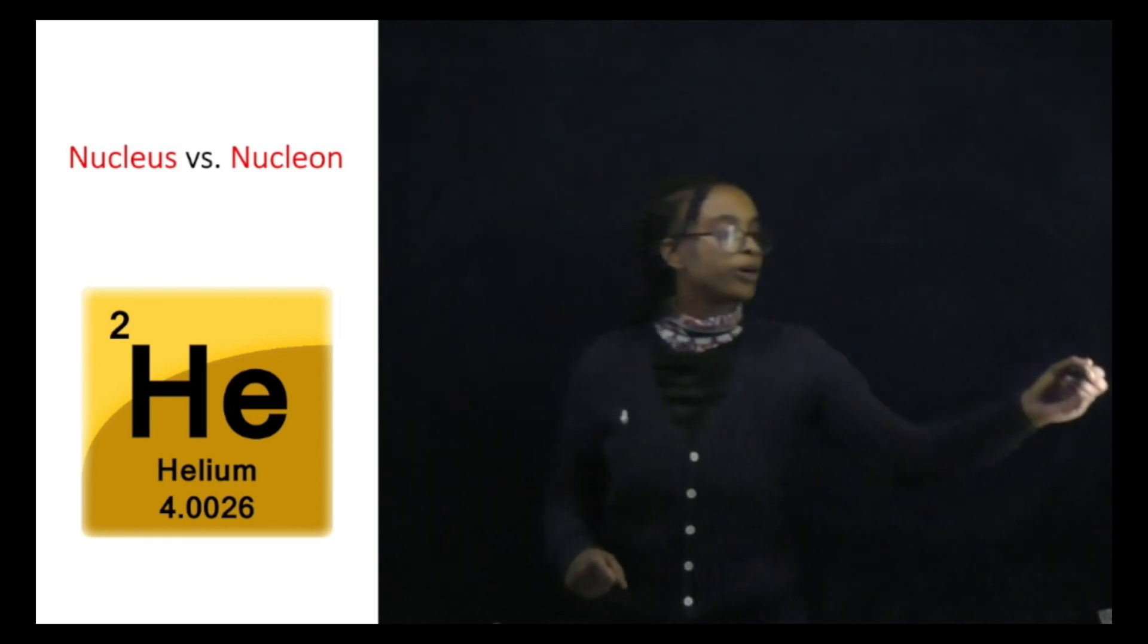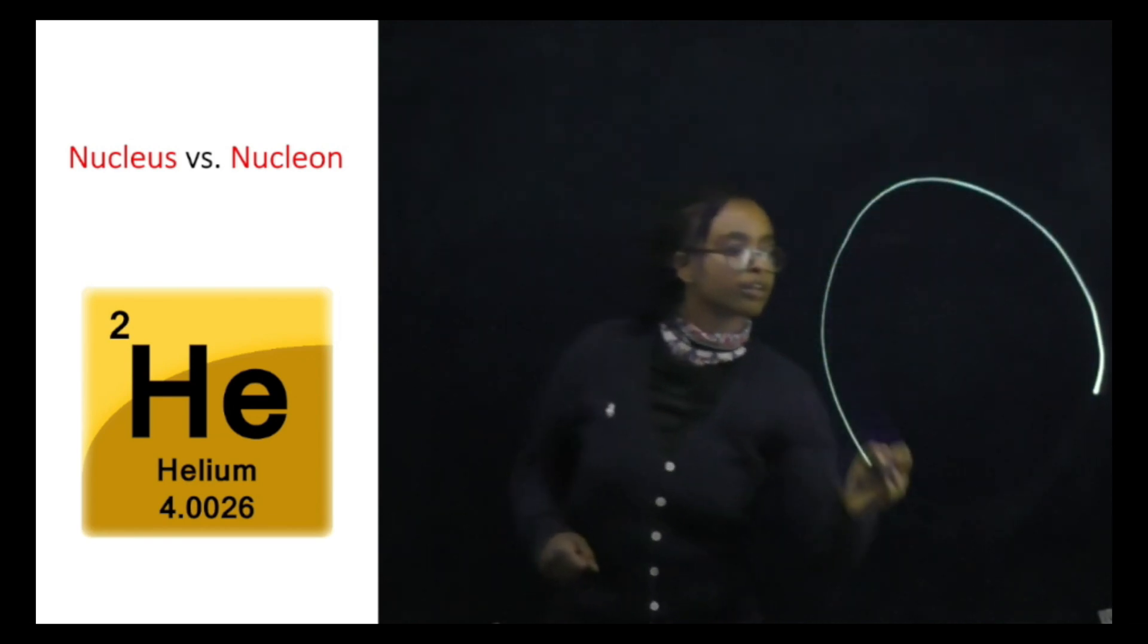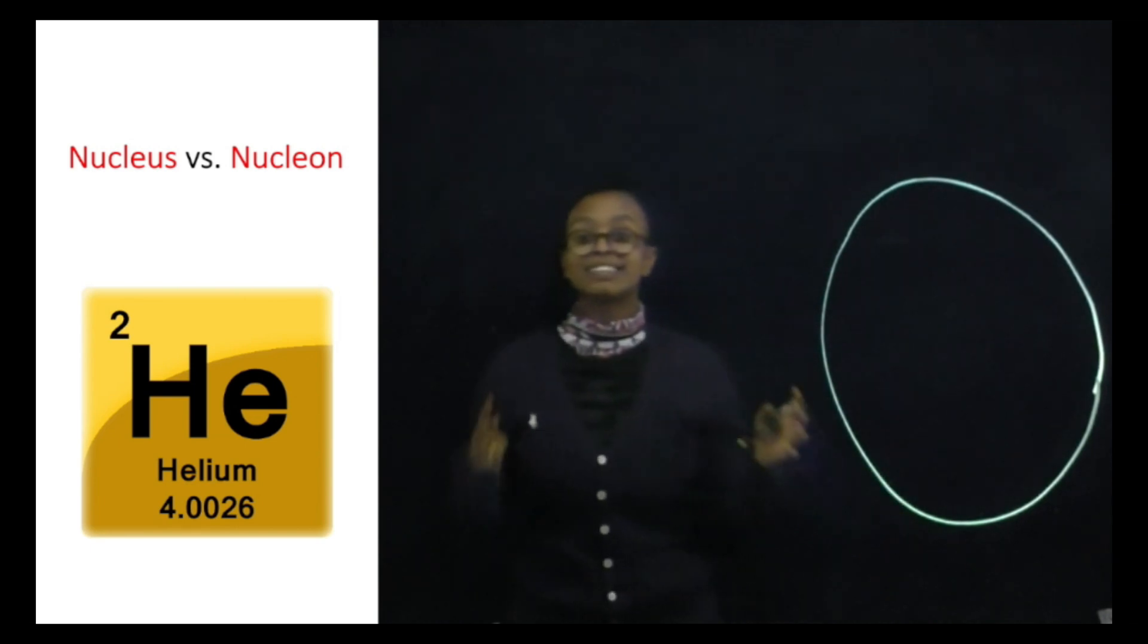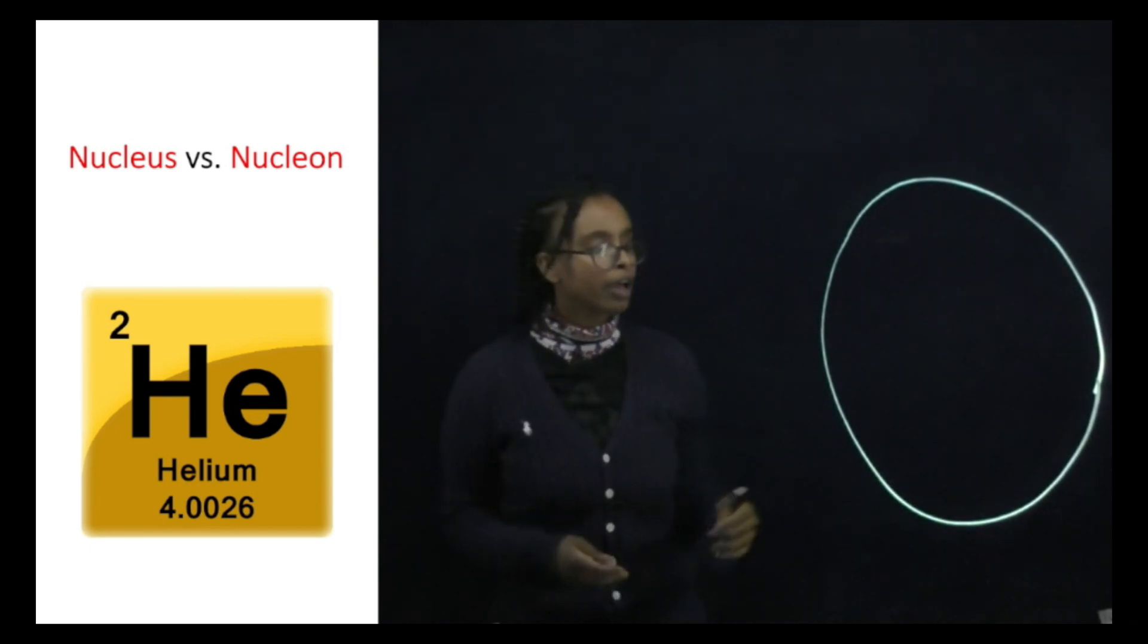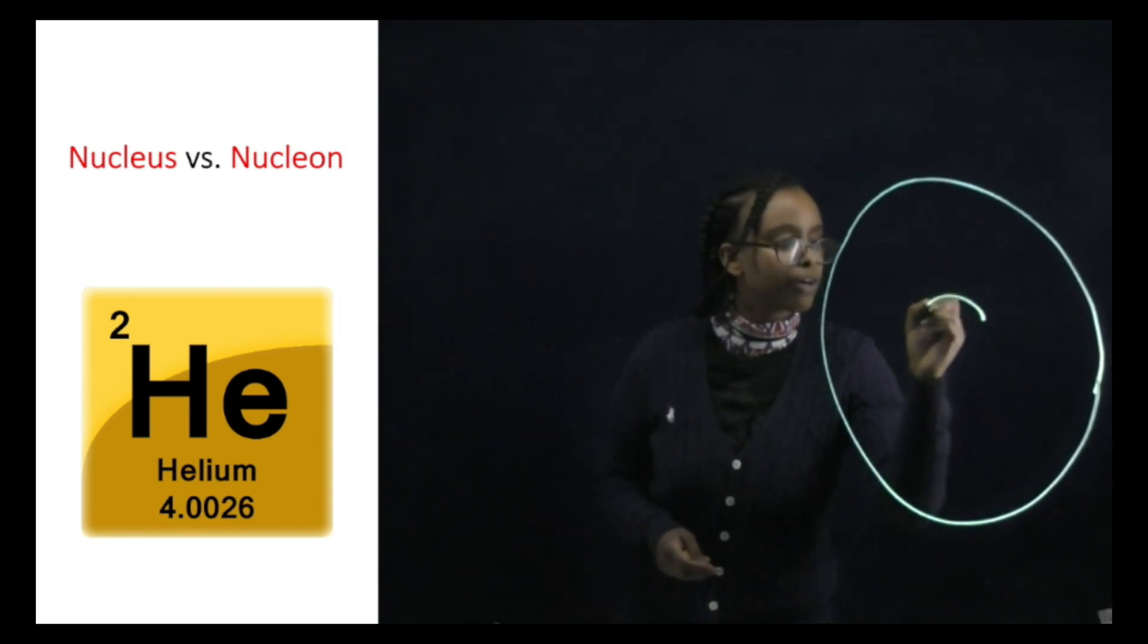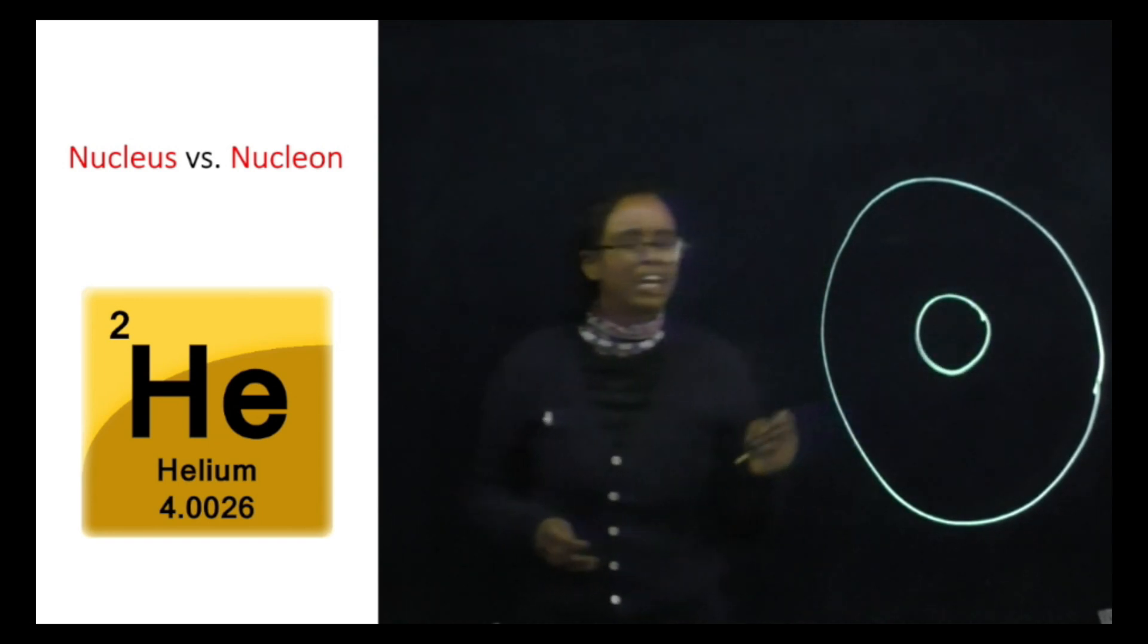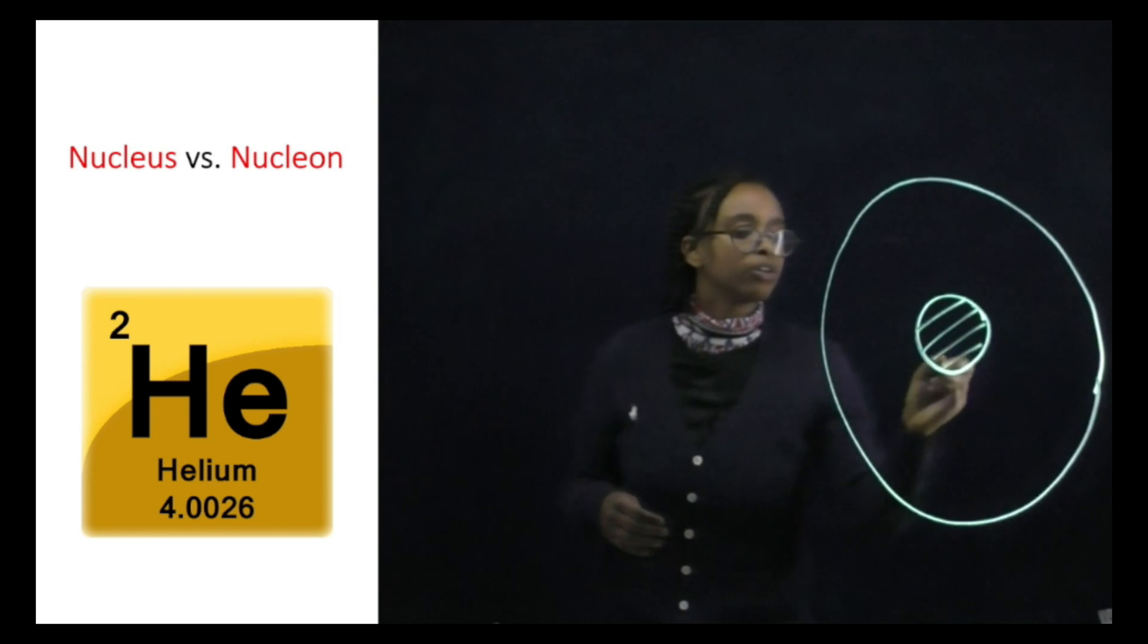So let's suppose this circle that I'm going to draw right here is the entire atom. In this middle part right here is this dense structure that we call the nucleus.